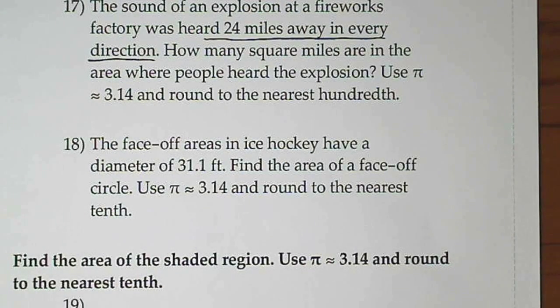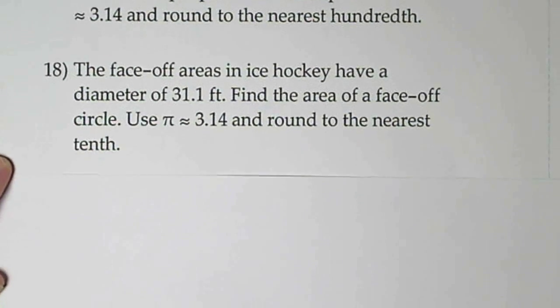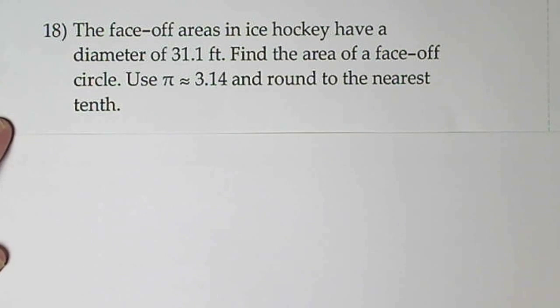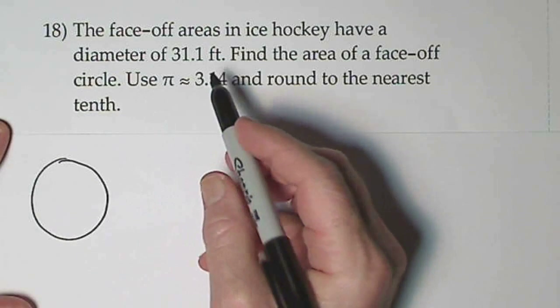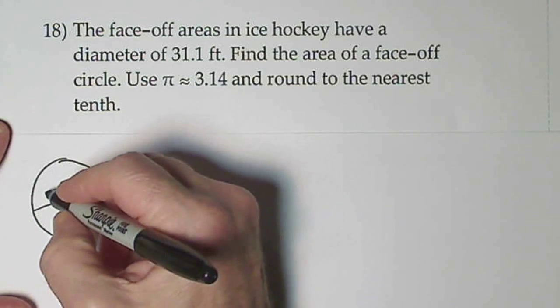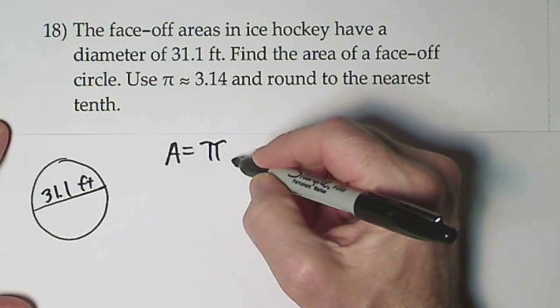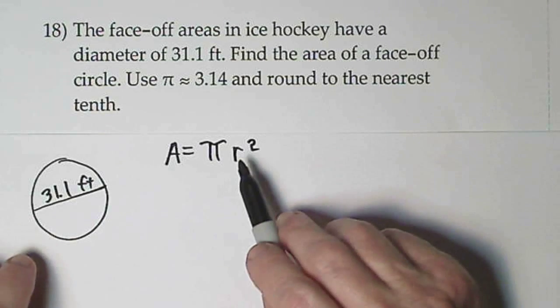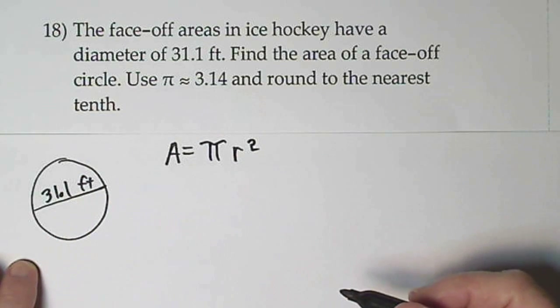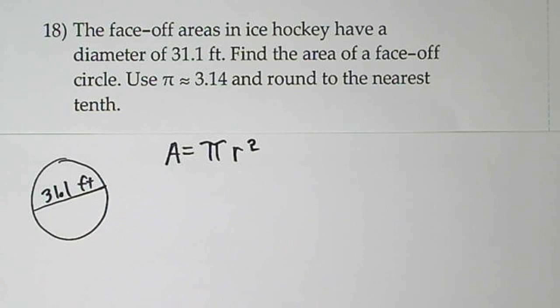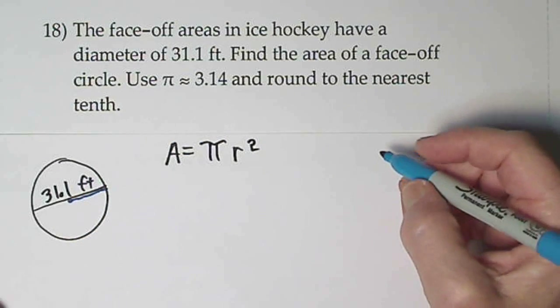For the next one, the face-off area in a hockey rink is going to be another circle with a diameter of 31.1 feet. We'll need our formula: area equals π r². But this formula calls for the radius and they've given us the diameter. So before we can even get started, we need to cut that in half. So I want to know the distance from here to here.